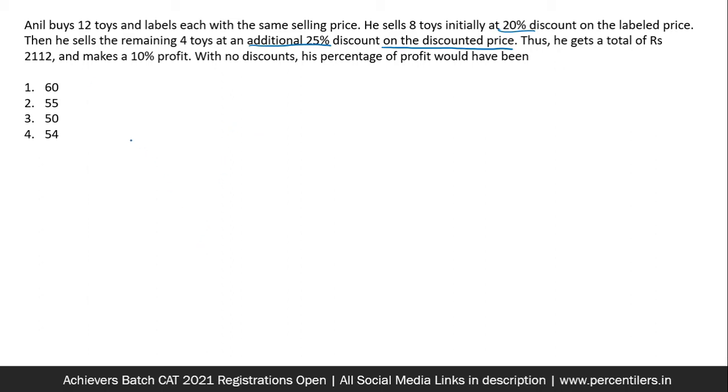My first method would be starting with this point. He gets a total of rupees 2112. That means the selling price is, and this was at a profit of 10%, which means the cost price of 12 would be 2112 divided by 1.1, which you get as 1920. This is cost price of 12 elements. Cost price of each would be 160 rupees.